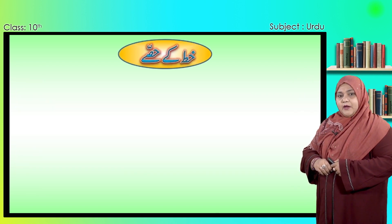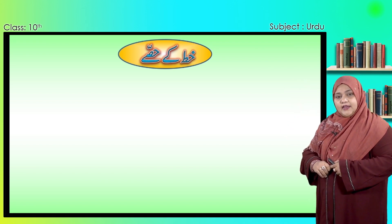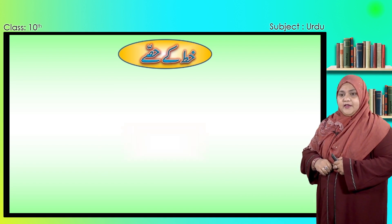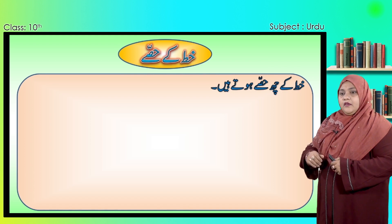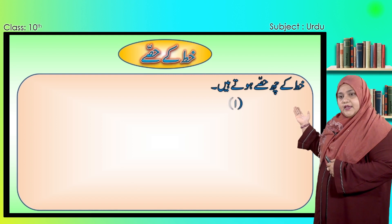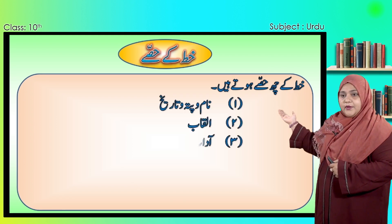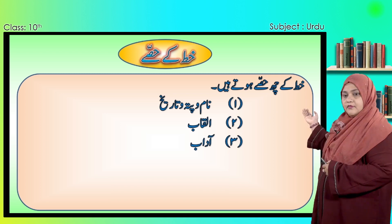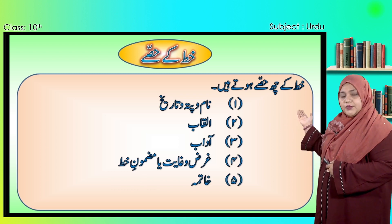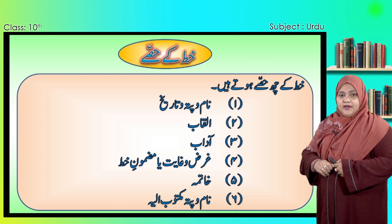عزیز طلبہ و طالبات، اب ہم دیکھیں گے خط کے حصے، یعنی خط کے کتنے حصے ہوتے ہیں۔ خط کے چھ حصے ہوتے ہیں: پہلا نام و پتہ، دوسرا القاب، تیسرا آداب، چوتھا غرض و غایت یا مضمون خط، پانچواں خاتمہ اور چھٹا نام و پتہ مکتوب الیہ۔